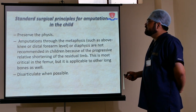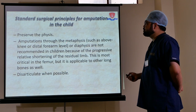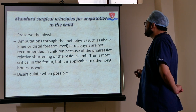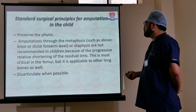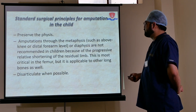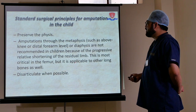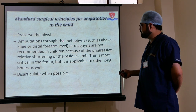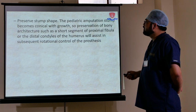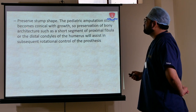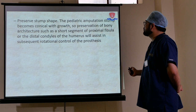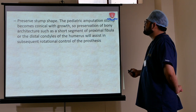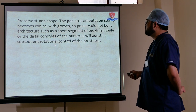Surgical principles in the child: preserve the physis. Amputations through the metaphysis or diaphysis are not recommended in children because of progressive relative shortening of the residual limb — most critical in the femur but applicable to other long bones as well. Disarticulate when possible. Preserve stump shape: the pediatric amputation stump becomes conical with growth, so preservation of bony architecture — such as a short segment of the proximal fibula or distal femoral condyle — assists in subsequent rotational control of the prosthesis.